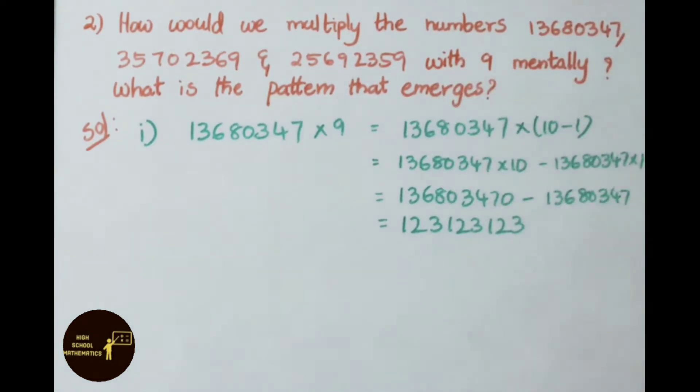See the solution: 1 crore 36 lakh 80347 multiplied with 9. So 9 can be written as 10 - 1. See this next step: given number multiply with 10, minus the given number multiply with 1.